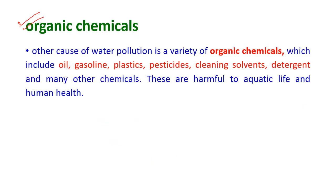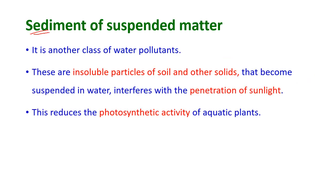Another cause of water pollution is a variety of organic chemicals, including oil and gasoline, plastics, pesticides, cleaning solvents, detergents and many other chemicals, which are harmful to aquatic life and human health. Sediment or suspended matter — insoluble particles of soil and other solids suspended in water — is another class of pollutants. They interfere with the penetration of sunlight, thereby reducing the photosynthetic activity of aquatic plants.